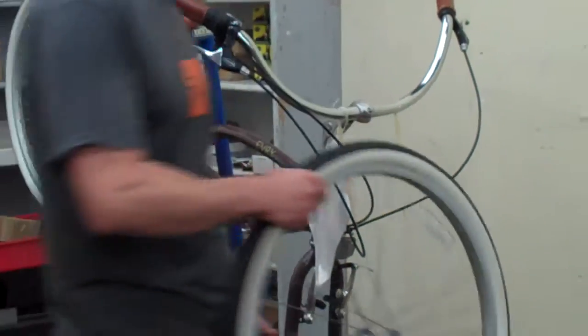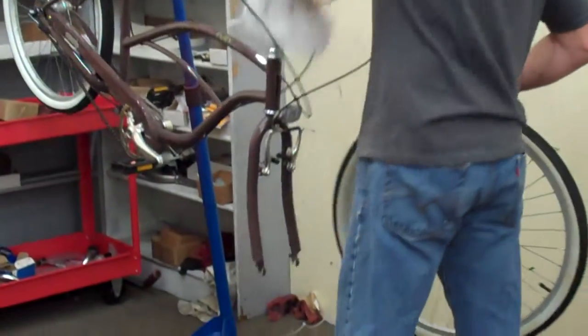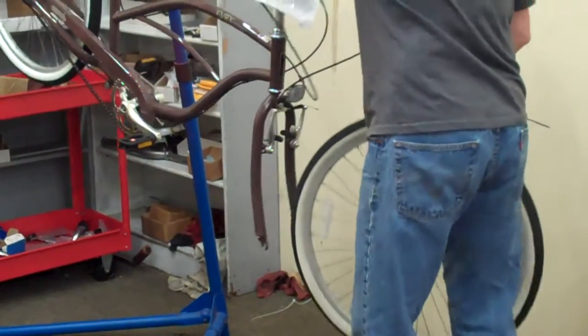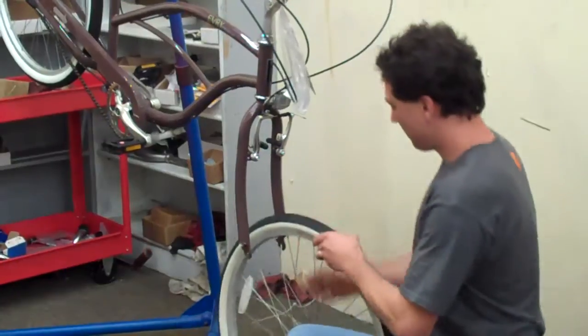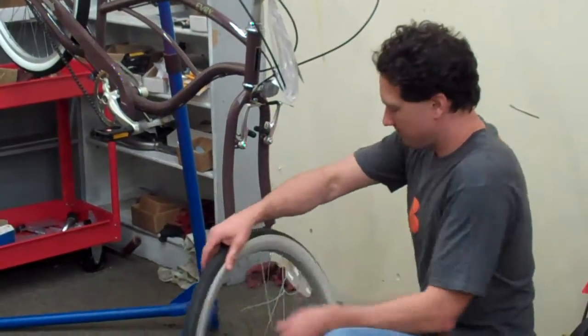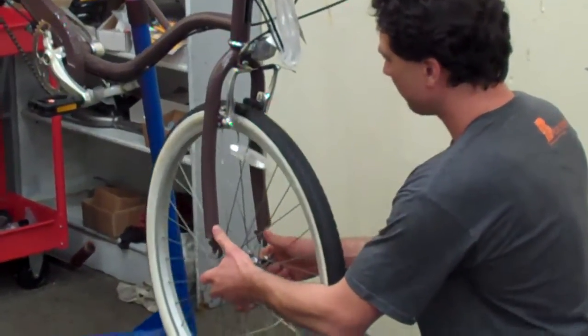And then you can take the wheel over to the fork. And you can just slip the wheel right into the fork as normal.